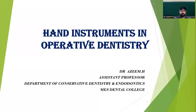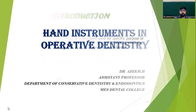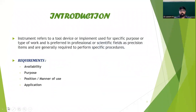Good morning. Today we are discussing hand instruments in operative dentistry. An instrument refers to a tool, device, or implement used for a specific purpose, preferred in professional or scientific fields as a precision item. The requirements of an instrument include availability, purpose, position or manner of use, and application — it should be easily available, designed for certain purposes, work in different positions, and perform a variety of applications.